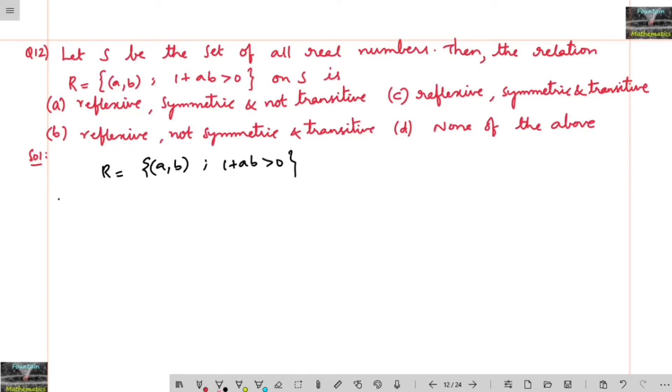Similarly, first reflexive. If a is related to a, which implies 1 plus a into a, a square. 1 plus a square is always greater than 0. This is true.